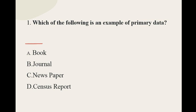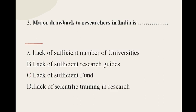Question number one: Which of the following is an example of primary data? The options are: book, journal, newspaper, census report. The correct option for question number one is newspaper. Moving on to question number two: Major drawback to researchers in India is — what are the options?